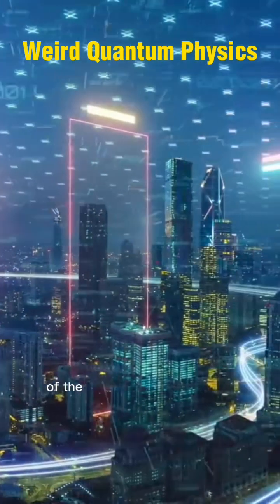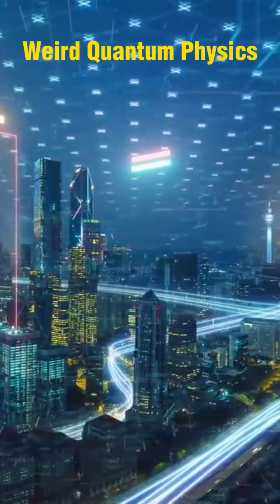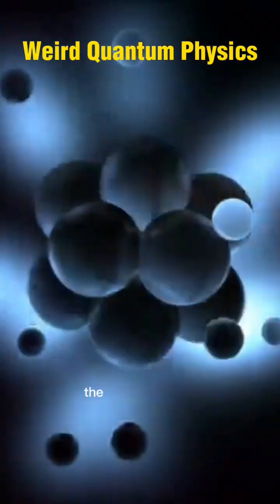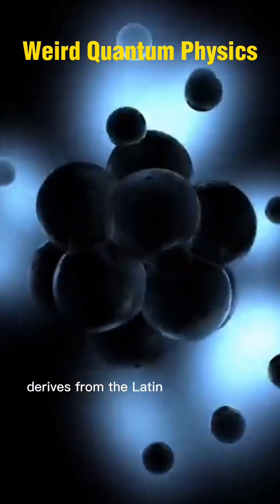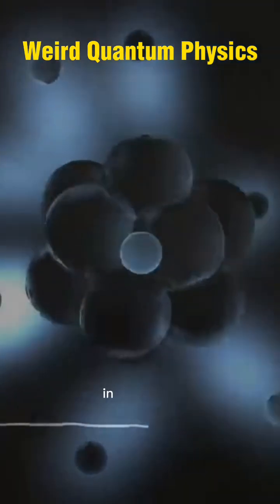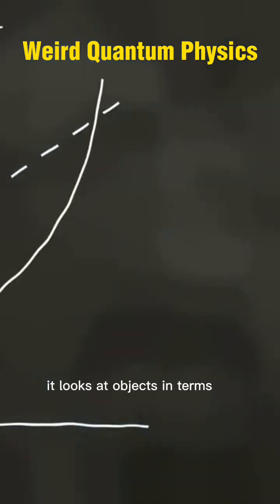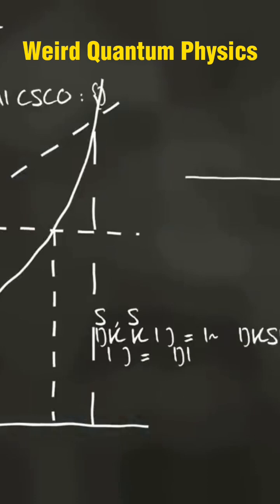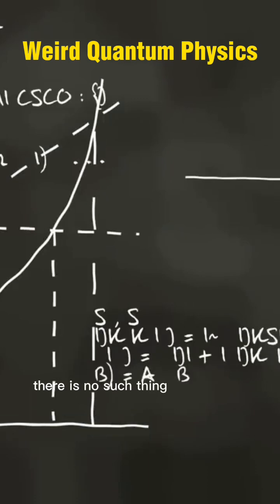The word quantum derives from the Latin word for 'how much.' In a nutshell, it looks at objects in terms of probability as opposed to certainty. In quantum mechanics there is no such thing as...